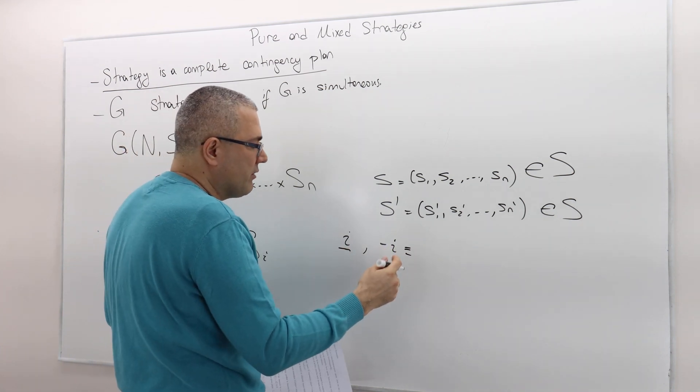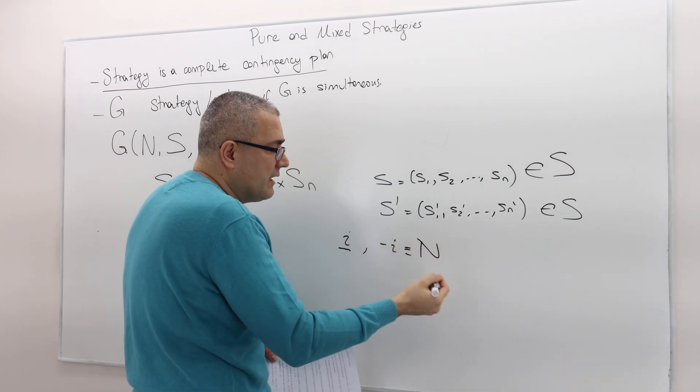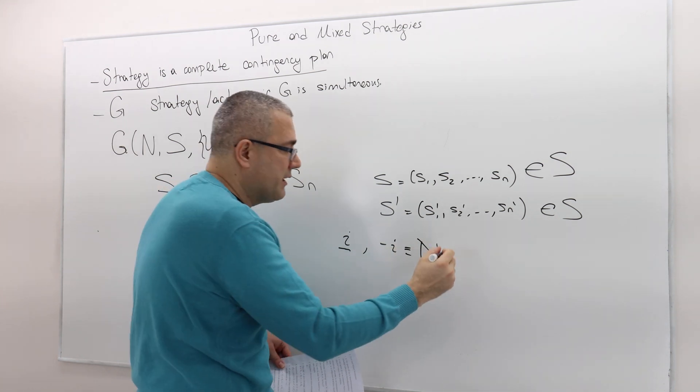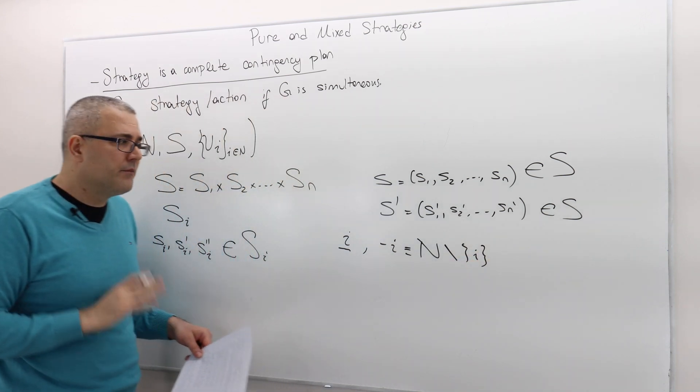Minus I is kind of N, the set of players, minus player I.